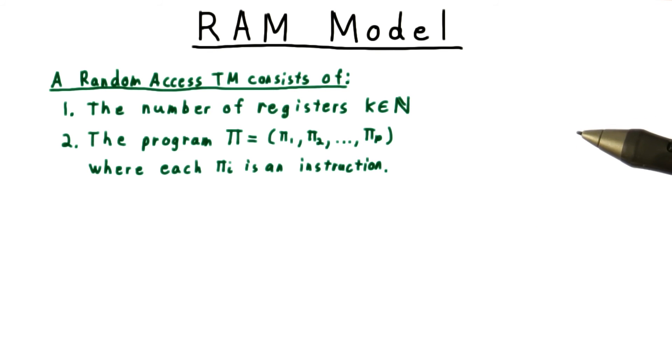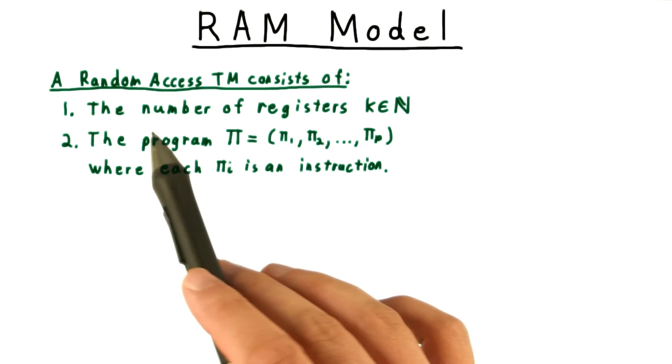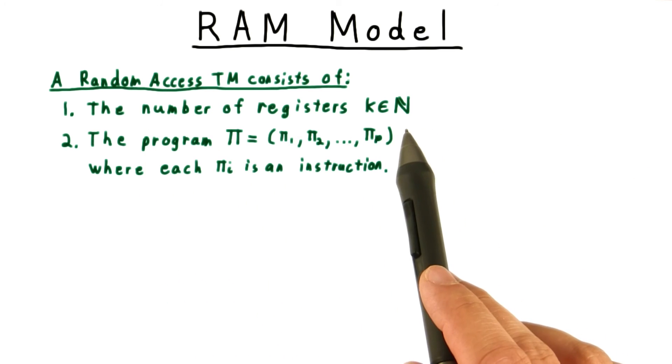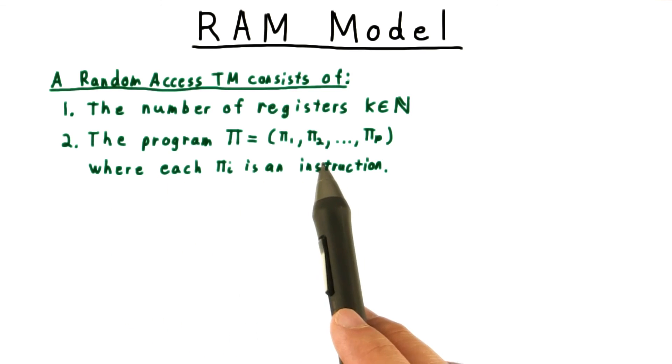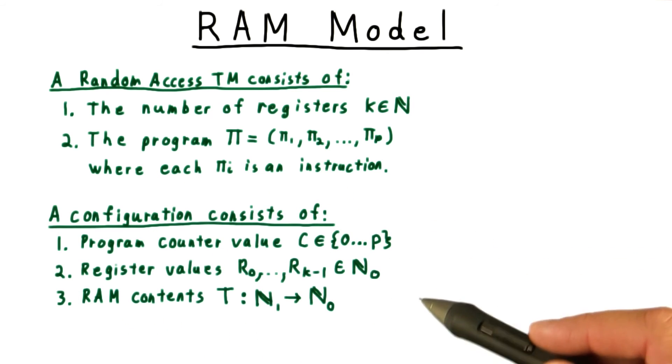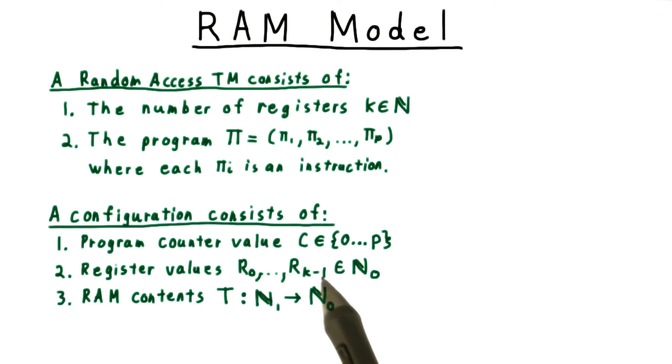In this spirit, we say that a random access Turing machine consists of a natural number k, indicating the number of registers, and a sequence of instructions pi. The configuration of a random access machine is defined by the counter value, which is 0 for the halting state and indicates the next instruction to be executed otherwise. Also, we have the register values and the values in memory, which can be expressed as a function. Note that only a finite number of the addresses will contain a non-zero value, so this function always has a finite representation. We'll use one-based indexing, hence the domain for the tape is the natural numbers starting from one.